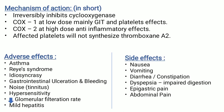Mechanism of action in short: it irreversibly inhibits cyclooxygenase. COX-1 at low doses — mainly GI tract and platelets are affected. At COX-2 at high dose, anti-inflammatory effects occur and platelets will not synthesize thromboxane A2. Adverse effects are asthma, Reye's syndrome, idiosyncrasy, gastrointestinal ulceration and bleeding, hypersensitivity, tinnitus, decreased glomerular filtration rate, and mild hepatitis. Side effects: nausea, vomiting, diarrhea or constipation, dyspepsia (impaired digestion), epigastric pain, and abdominal pain.